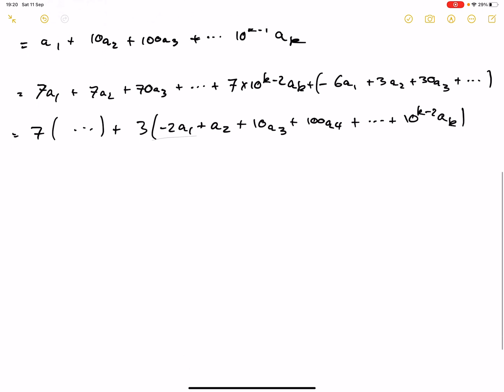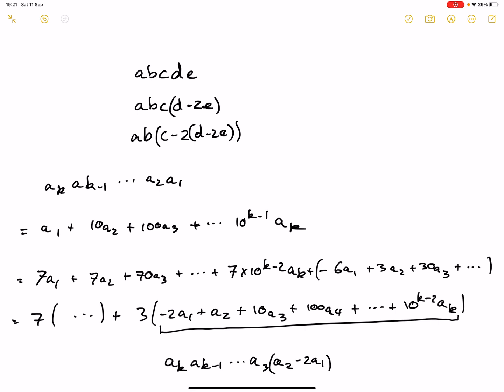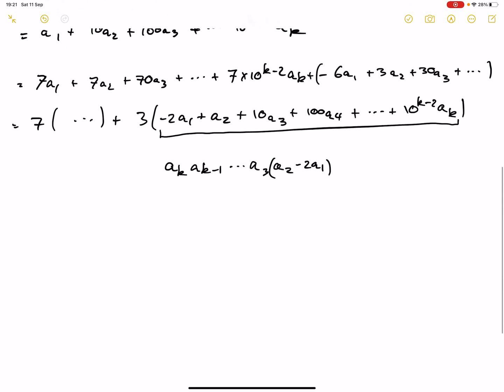Now, if you notice, what we have in this bracket here is actually Ak, the number Ak, Ak-1, all the way down to A3, A2 minus 2A1, because they have the same power of 10. And that's our number, which is what we were trying to find up here, where we've got the second last term minus 2 times the last term. So A2 minus 2A1. And the reason that that is significant is if I write the next line...